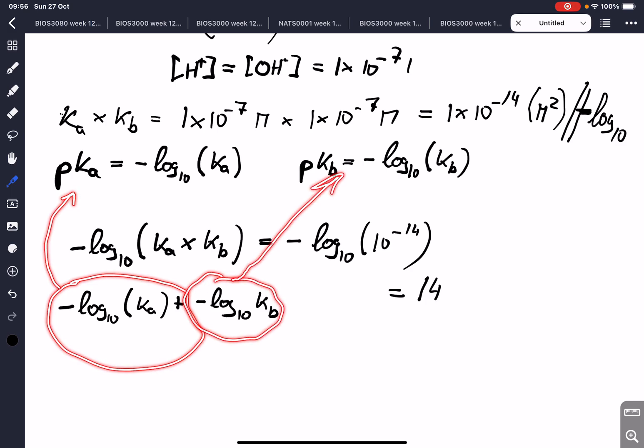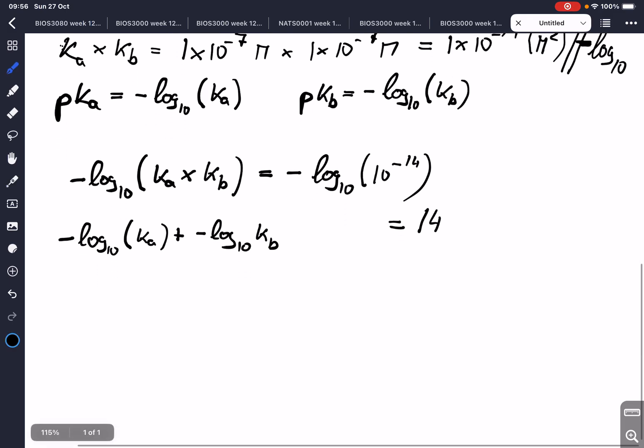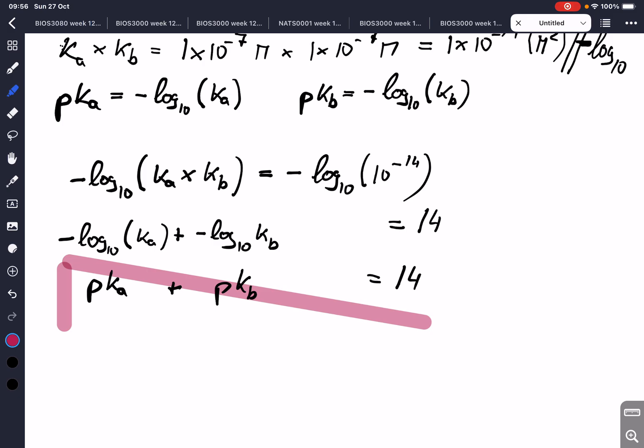So, we can simplify that and write pKa plus pKb equals 14. And that holds true for whatever acid and base pair we are dealing with. pKa plus pKb equals 14, whatever the acid or the base might be.